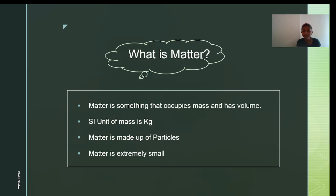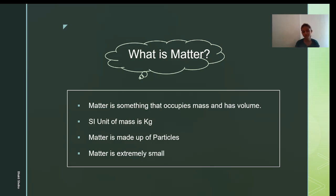Mass means it occupies space, and volume refers to the three-dimensional measurement — height, width, and depth. So matter occupies space and has volume. Examples of matter include everything around you: a PC, a cube, a pen, pencil, switchboard, colors — everything, because we know each of these is occupying space.